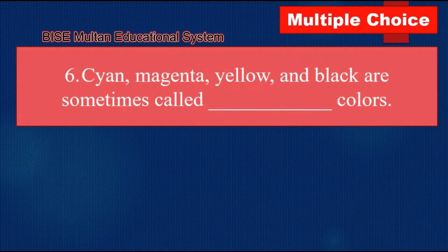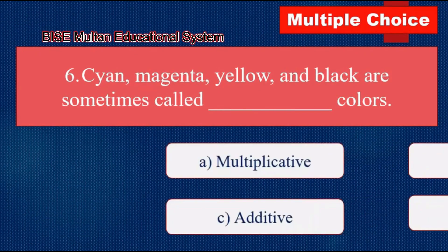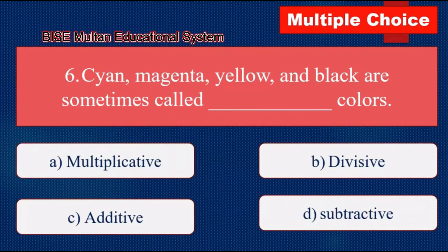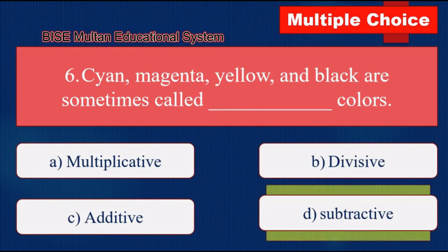Question number 6. Cyan, magenta, yellow, and black are sometimes called blank colors. The answer is subtractive.